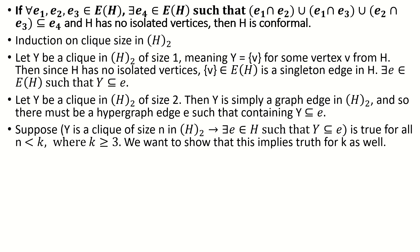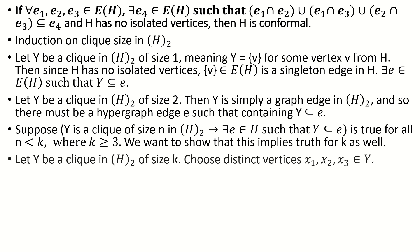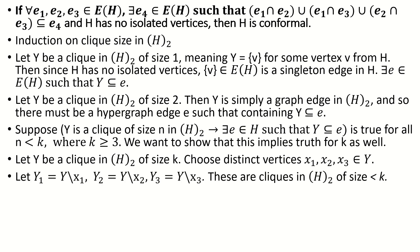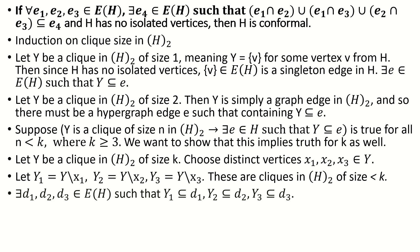For our inductive step, we'll show that if this holds for cliques of size less than k, then it holds for cliques of size k as well. Let y be a clique of size k in the two-section of h, and choose three distinct vertices x1, x2, x3 from y. Let y1 be the set y without vertex x1, y2 the set y without vertex x2, and y3 the set y without vertex x3. Each of these sets are also cliques in the two-section because they're subsets of y, and they're all of size less than k. By our inductive hypothesis, there's an edge d1 containing y1, an edge d2 containing y2, and an edge d3 containing y3.